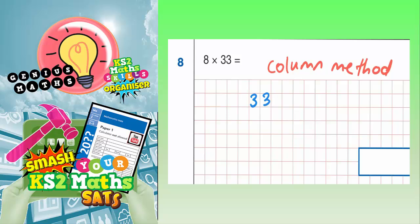So here we go, 33 times by 8. Let's leave a space for our answer there, and now we're ready to work it out. So you always start with the units column.